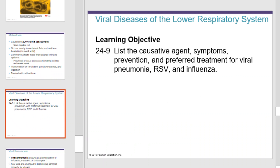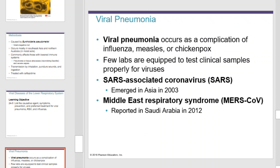Viral diseases of the lower respiratory system: viral pneumonia occurs as a complication of influenza, measles, or chickenpox. Few labs are equipped to test clinical samples properly for viruses. SARS-associated coronavirus emerged in Asia in 2003 and is an excellent example of an organism that causes viral pneumonia. Middle East Respiratory Syndrome, or MERS-CoV, was reported in Saudi Arabia in 2012 and is also an excellent example.